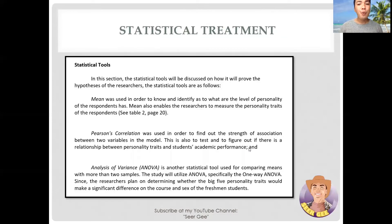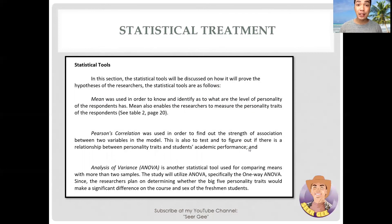If one has used a technique that is, strictly speaking, not appropriate to the data, this fact should be noted and an explanation should be made. It is only when the statistical technique used is new or unfamiliar that the formula is given. You can also mention to which problem statement the statistical tool is used or applied.